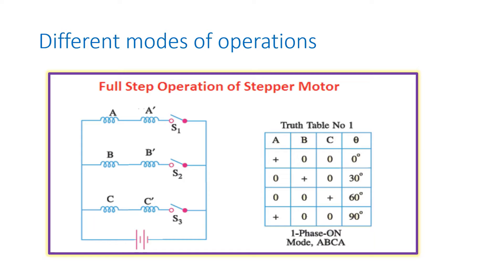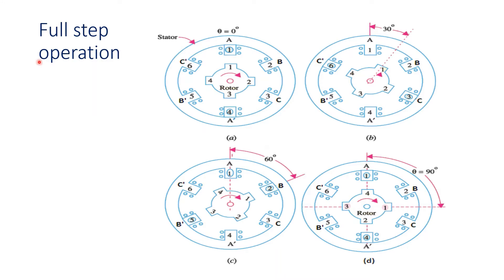Here the diagram shows a circuit diagram of the stepper motor with coils A, A-dash, B, B-dash, C, C-dash. We are exciting the coils and switching on switches one, two, three based on this truth table. We are going to switch on the switches and excite the coils.